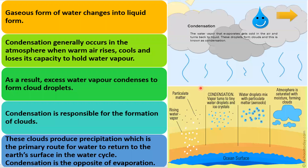Condensation: the gaseous form of water changing into liquid is called condensation. Condensation generally occurs in the atmosphere when warm air rises, cools, and loses its capacity to hold water vapor. As a result, excess water vapor condenses to form cloud droplets. Condensation is responsible for the formation of clouds, and these clouds produce precipitation, which is the primary route for water to return to the earth's surface in the water cycle.